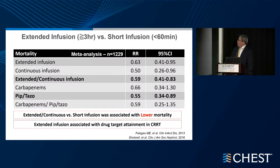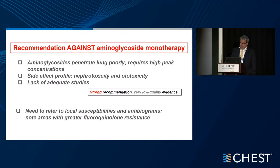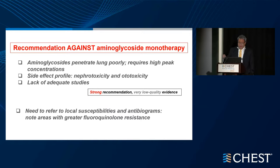Some studies suggest that extended or continuous infusion versus short infusion of antibiotics — less than 60 minutes — was associated with lower mortality. This has been reported in patients also with dialysis, and these extended infusions are associated with better drug target attainment, which is likely responsible for the lower mortality. There are recommendations in the guidelines against the use of monotherapy with aminoglycosides, mostly because of poor penetration to the lung, and high peak concentrations associated with nephrotoxicity and ototoxicity.